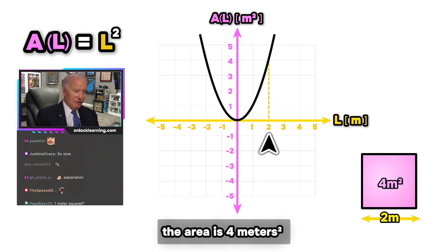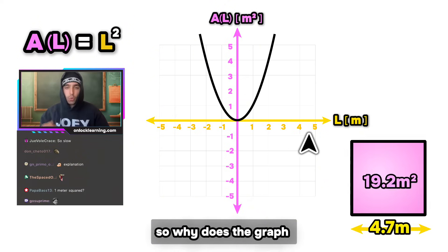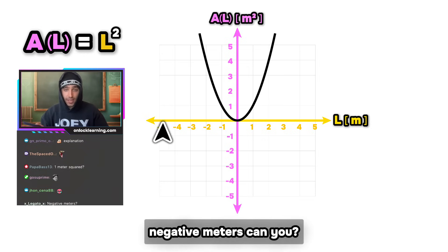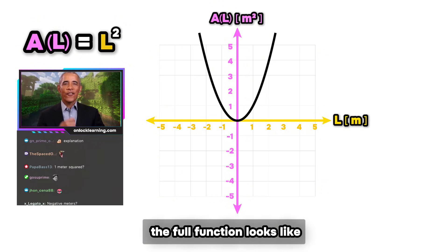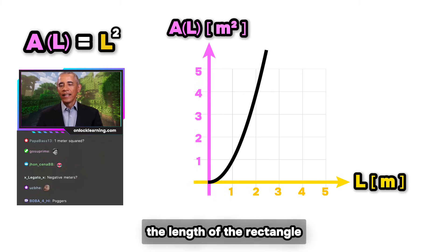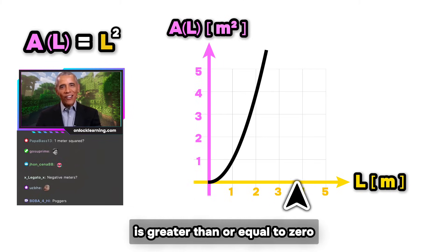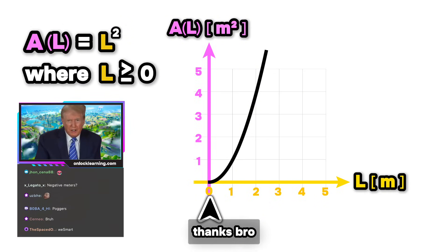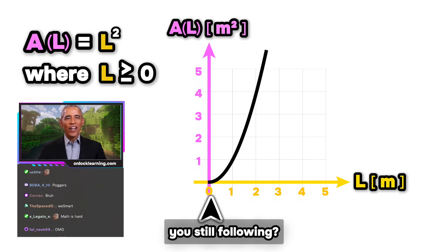So why does the graph go the other way? You can't have like negative meters, can you? Ah, that's right. So even though this is what the full function looks like, we only care about the part where L, the length of the rectangle, is greater than or equal to zero. Let me put that up on the screen. Thanks bro. Student and chat, you still following? Yep.